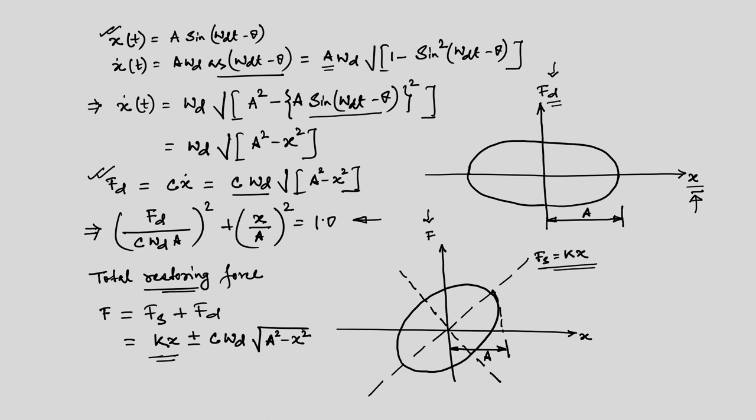In most problems we consider viscous damping where damping is defined as a percentage of critical damping ratio — say 2% or 5%. From the system parameters (mass and stiffness) we can quantify the amount of damping present. However, when designing a material, one of the critical properties is its damping, and for that we need two important parameters.